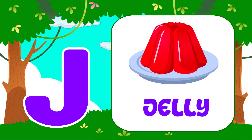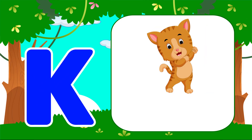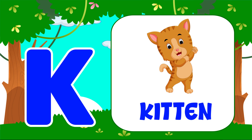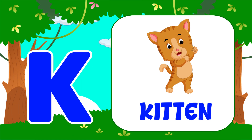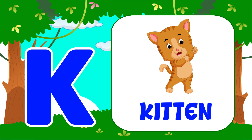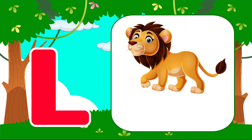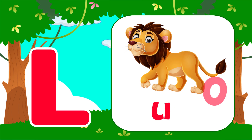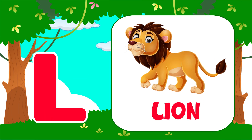K is for kitten, k-k-k-kitten. K is for kitten, k-k-k-k-k. L is for lion, l-l-lion. L is for lion, l-l-l-l.